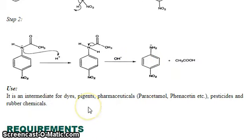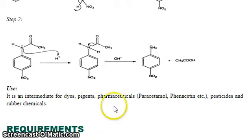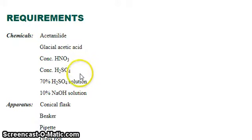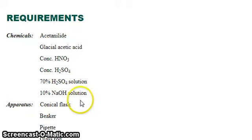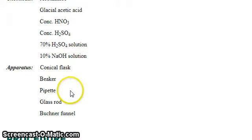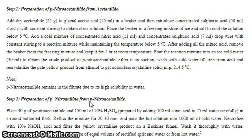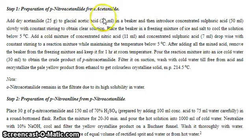The uses of paranitroaniline include its role as an intermediate for dyes, pesticides, reagents, pharmaceuticals, and rubber chemicals. The required chemicals are: acetanilide, glacial acetic acid, concentrated nitric acid, concentrated sulfuric acid, 70% sulfuric acid solution, and 10% sodium hydroxide solution.